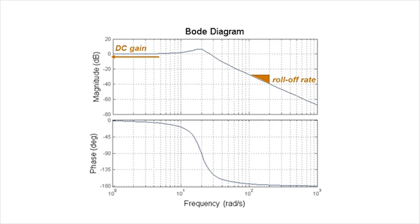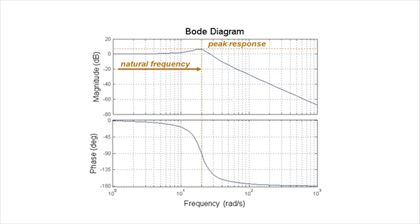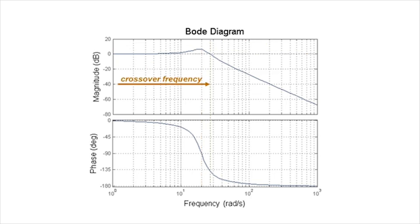Roll-off rate is usually expressed in dBs per decade, meaning a factor of 10 on the frequency scale. Any peak in the magnitude trace will generally be associated with some natural frequency of the system. Any magnitude value above zero dBs means that the system is amplifying the input signal. Remember that zero dBs corresponds to the log of one, which happens when the amplitude of the output matches the amplitude of the input — so the magnitude ratio is one. Any value below zero dBs means the system is attenuating the input signal. The point where that change happens is defined as the crossover frequency.